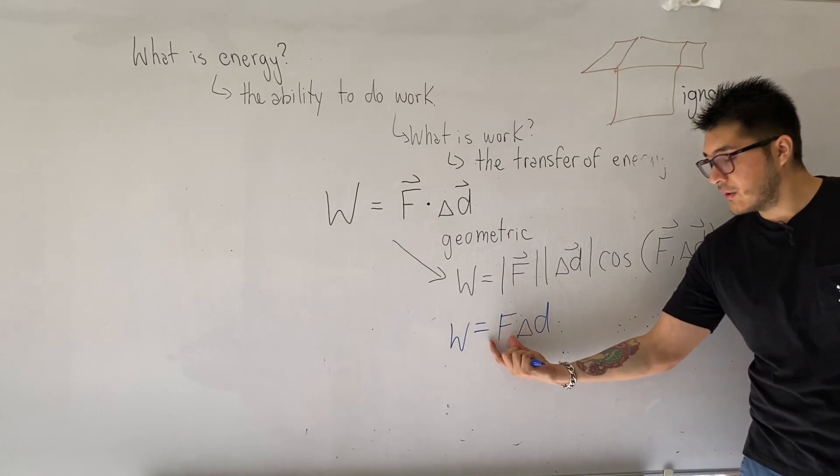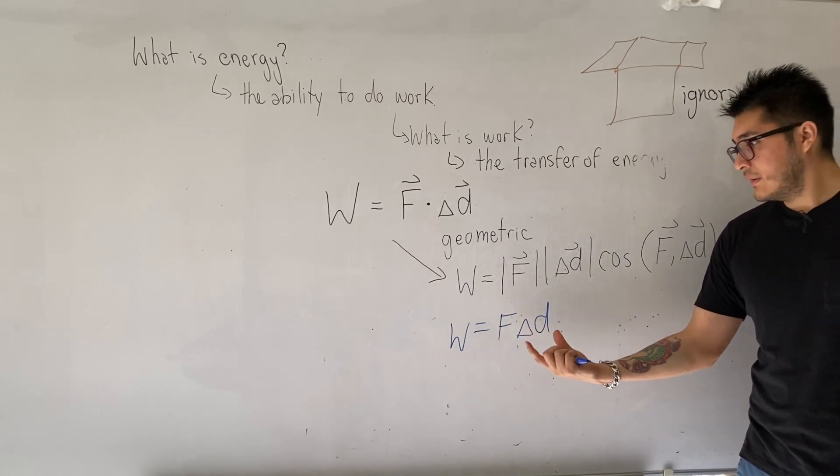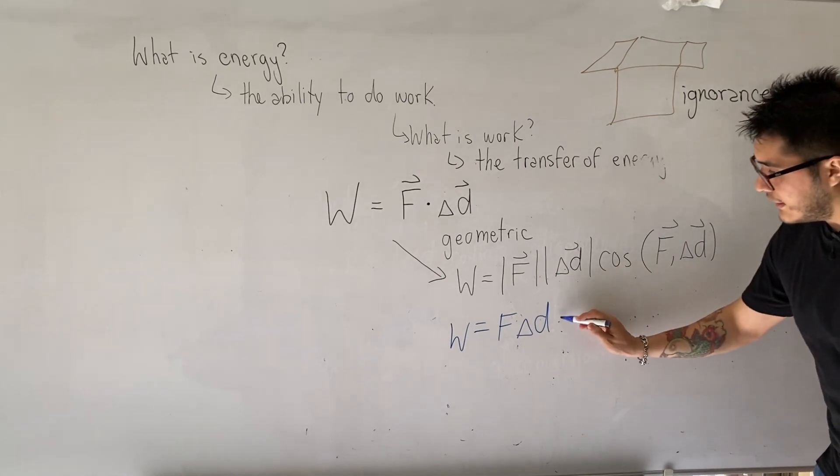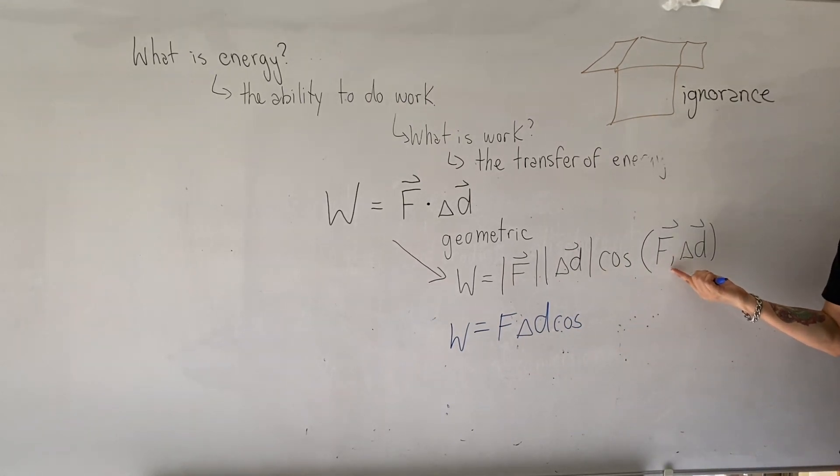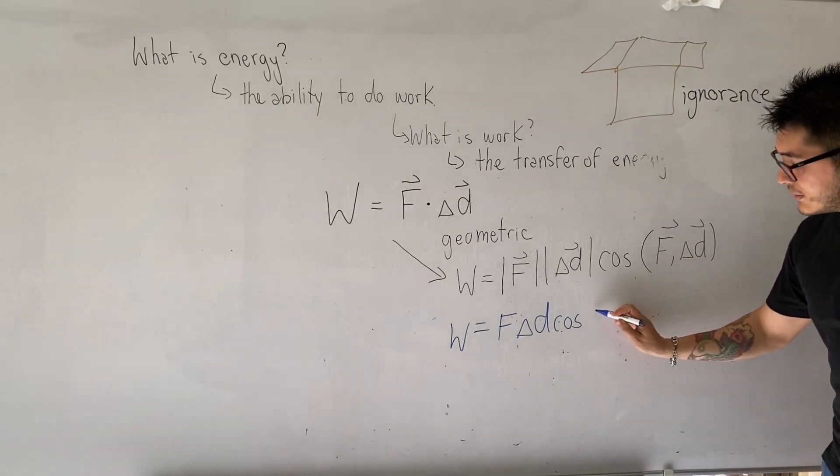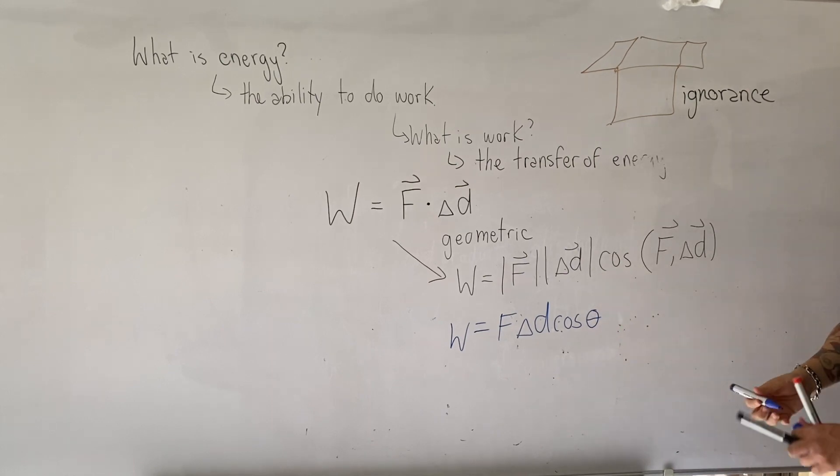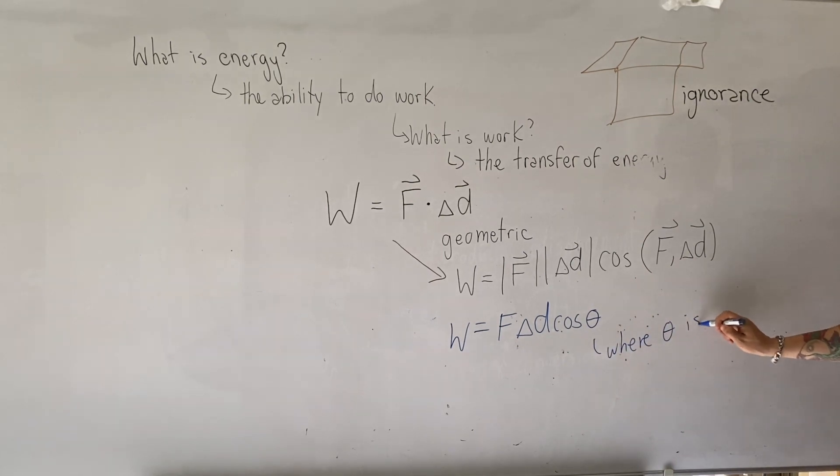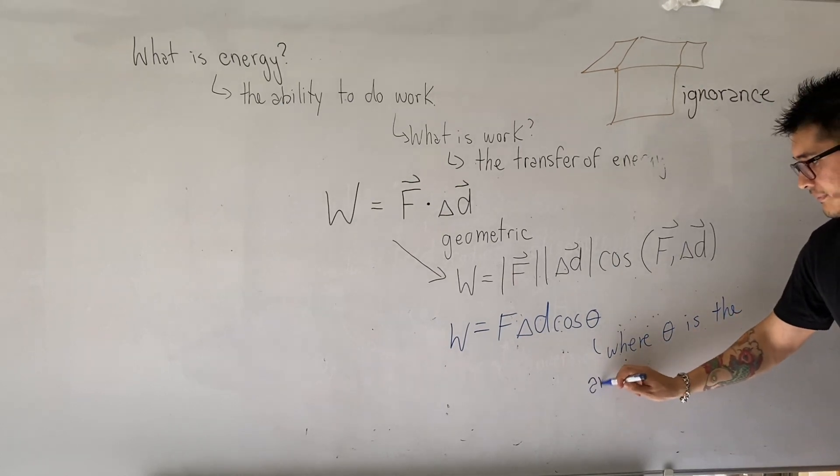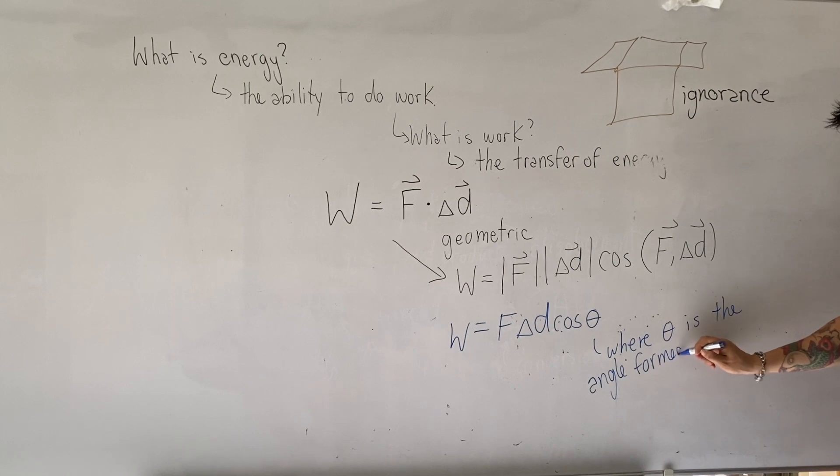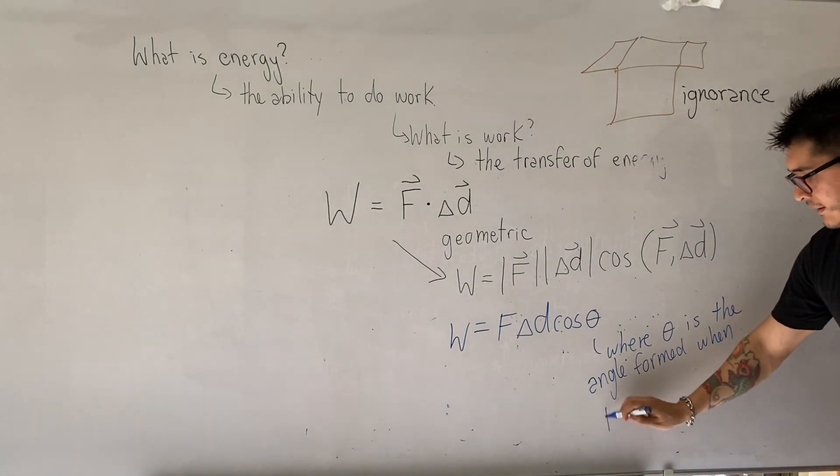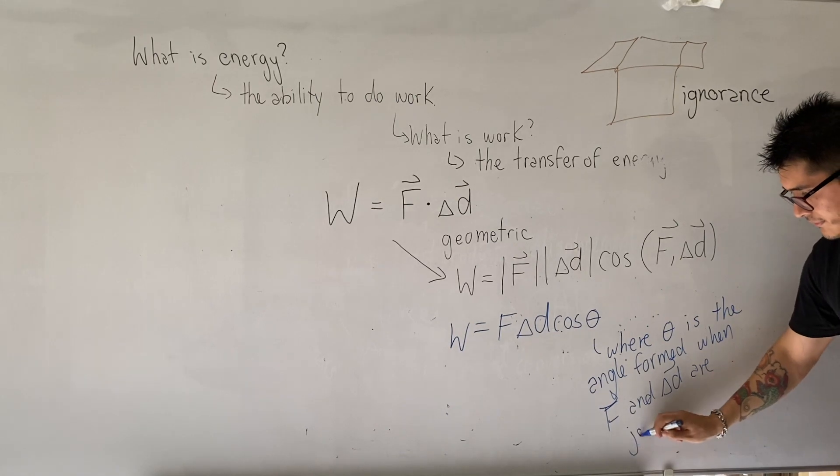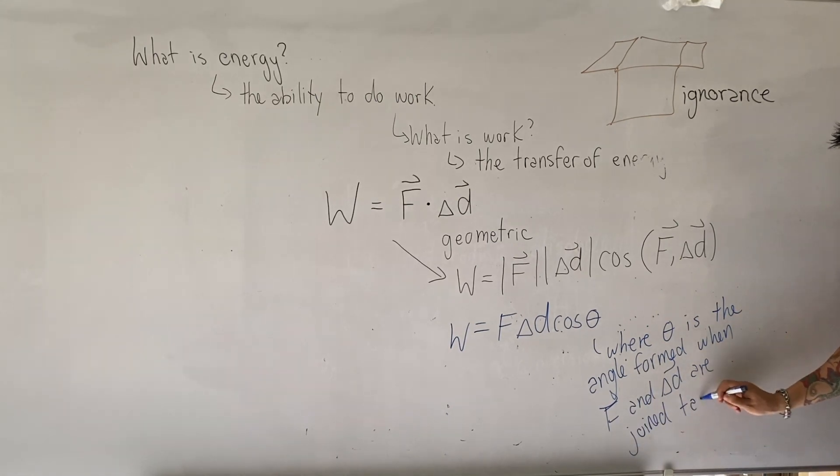Another way we can write it more friendly would be work equals F delta D cosine theta, where you need to be very specific. Theta is the angle formed when F, in other words the force vector, and displacement are joined tail to tail.